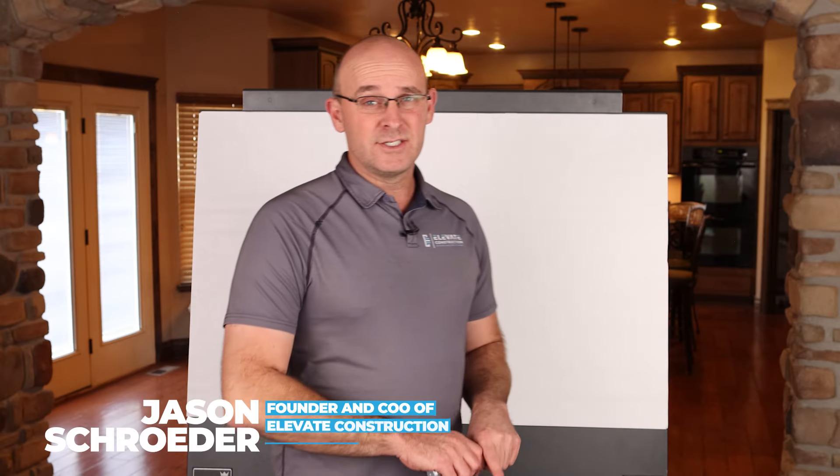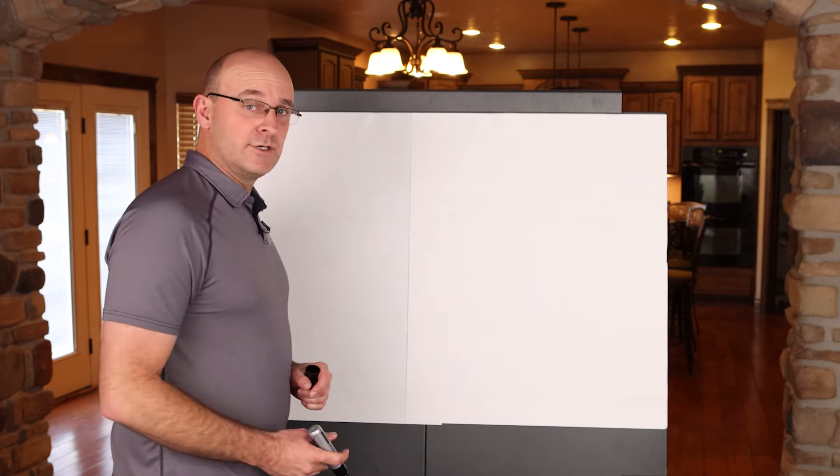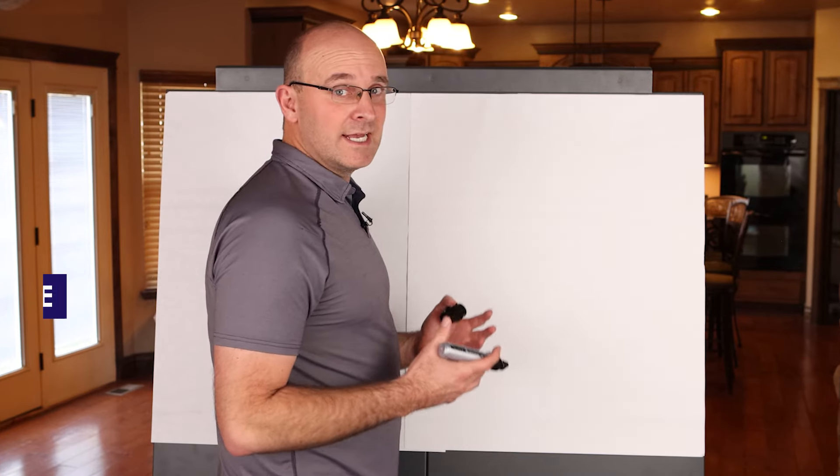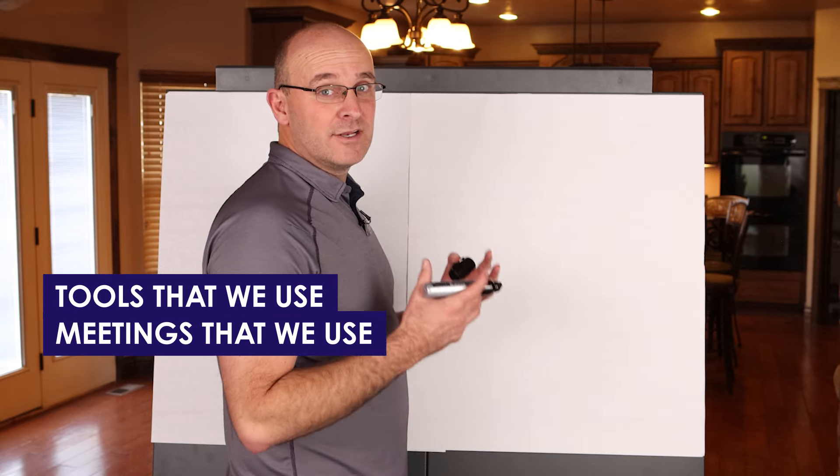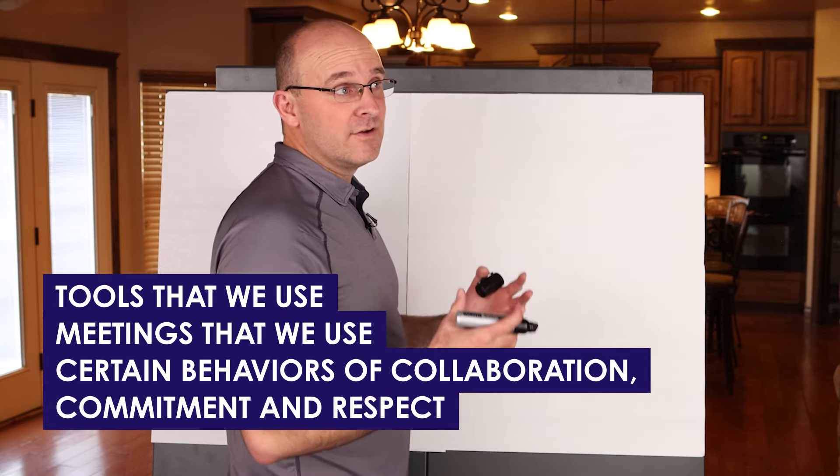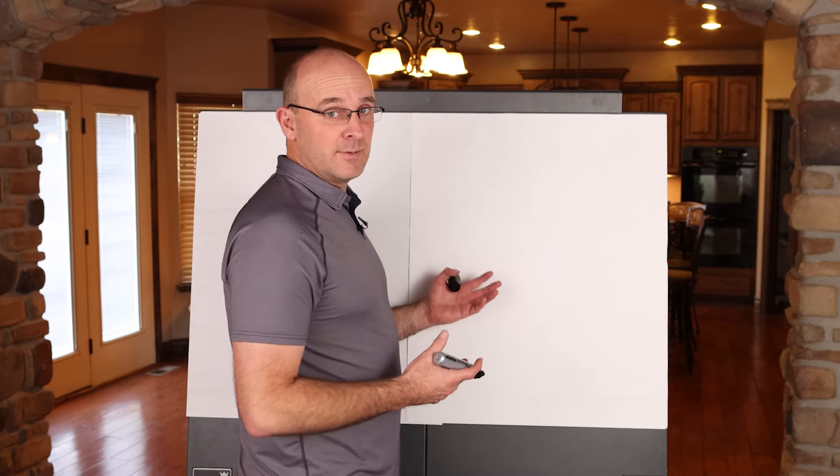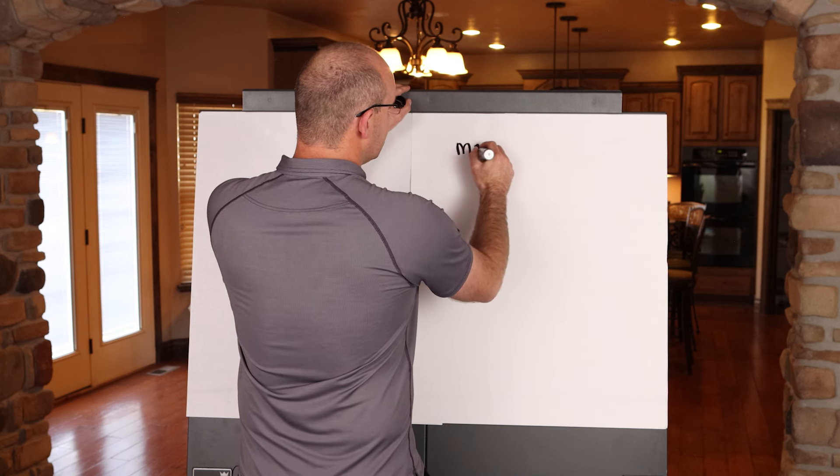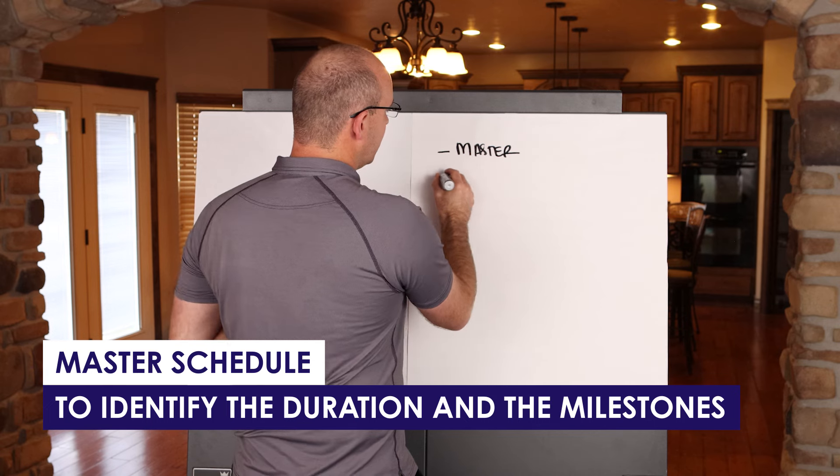All right, so we're just going to jam out right now. We're talking about a weekly work plan. I want to talk to you about how it fits within the Last Planner System. The Last Planner System really has tools that we use, meetings that we use, and certain behaviors of collaboration, commitment, and respect. When I talk about the Last Planner System, I always say that it starts with a master schedule, and the master schedule is to identify the duration and the milestones.